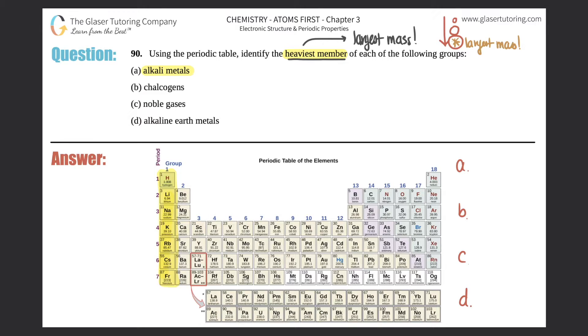They're correct that group 1 is the alkali metals, however, what type of element is hydrogen? Hydrogen is a non-metal, so hydrogen cannot be classified as an alkali metal. Actually, get rid of hydrogen - it's not part of the alkali metals. But the rest of the group is, from lithium all the way down to francium.